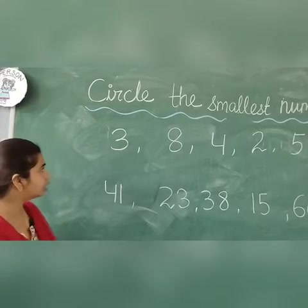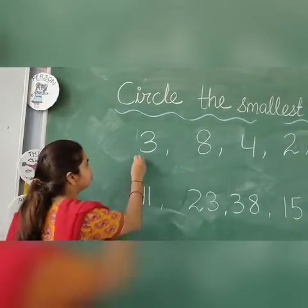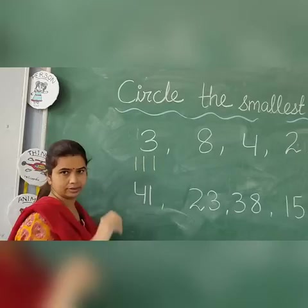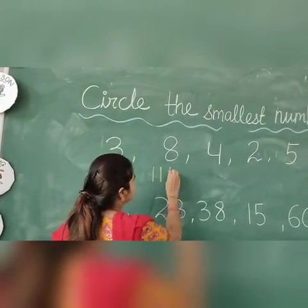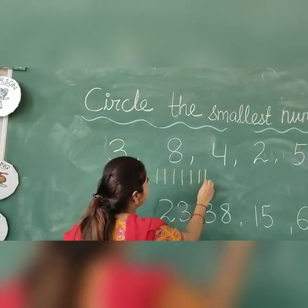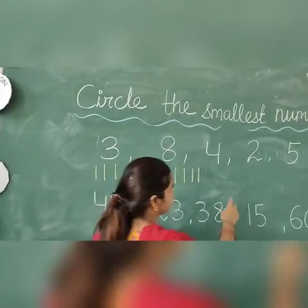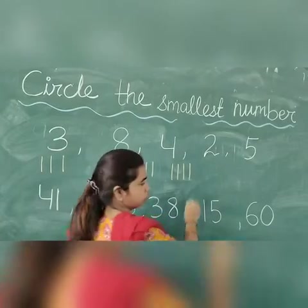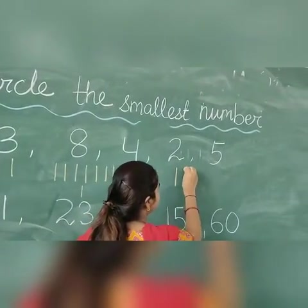Again I have written here 3, so I will draw this — 6, then 8: 1, 2, 3, 4, 5, 6, 7, 8. Then 4: 1, 2, 3, 4. Then 2: 1, 2.